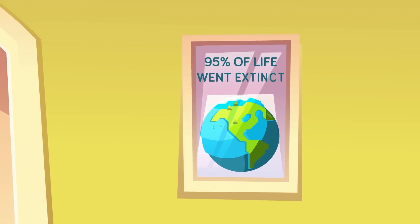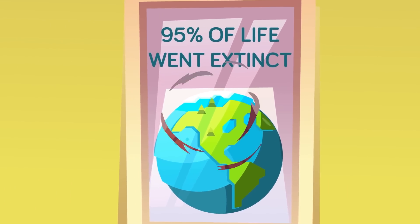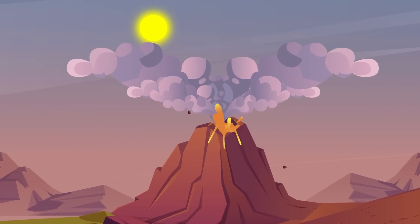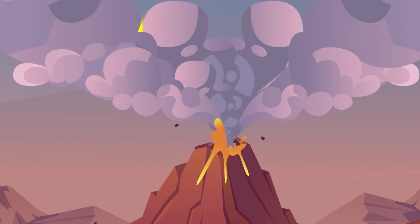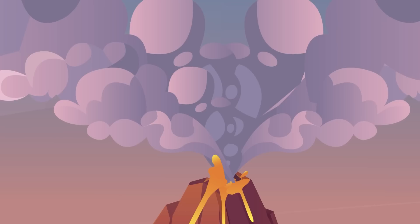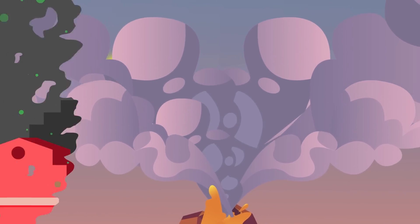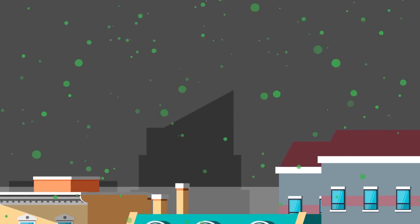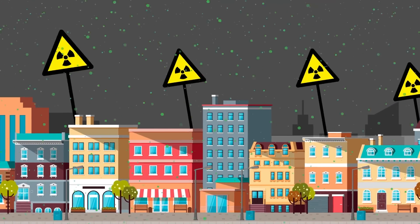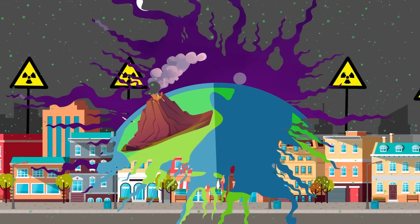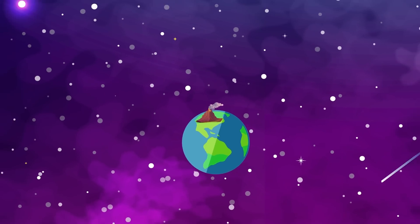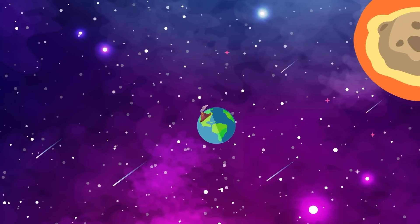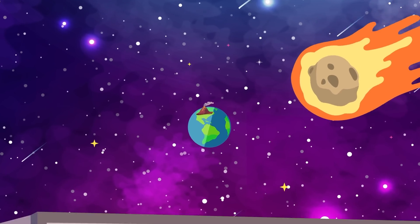When a supervolcano erupts, it spews debris into the atmosphere, blocking the sun. Sulphurous gas is released, causing acid rains to fall across the planet. The ozone layer is torn apart, and harmful radiation bombards the planet. Basically, whatever isn't destroyed by the initial eruption will be devastated by the side effects of the supervolcano. But the scariest and one of the most likely doomsday scenarios comes from the heavens.